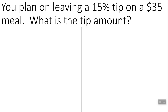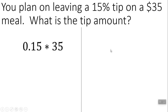You plan on leaving a 15% tip on a $35 meal. What is the tip amount? You could go 15% of 35. Using a standard calculator, you'd have to make your percentage into a decimal: 15% becomes 0.15, times 35.